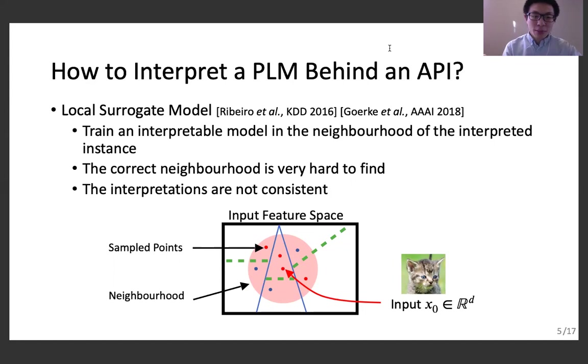The second problem is that their interpretations are not consistent. Since the local surrogate models are trained from random samples, there are some cases that different random samples leading to dramatically different interpretations for very similar instances.